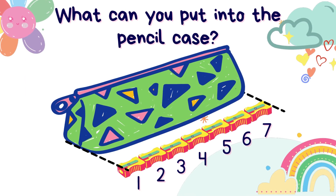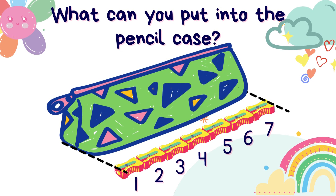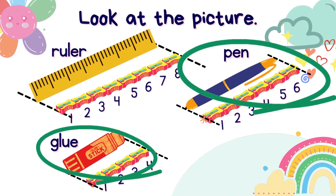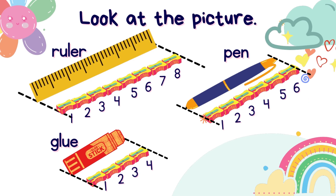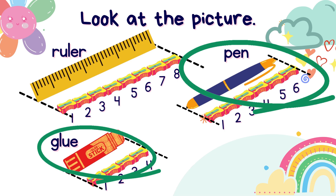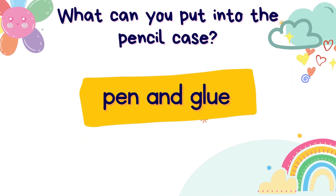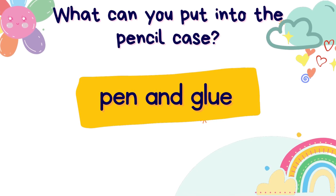Can you tell, amongst the 3 objects — ruler, pen, and glue — what can you put into the pencil case with the length of 7 sharpeners? The ruler is 8 sharpeners, pen is 6 sharpeners, and glue is 4 sharpeners. The answer: pen and glue.